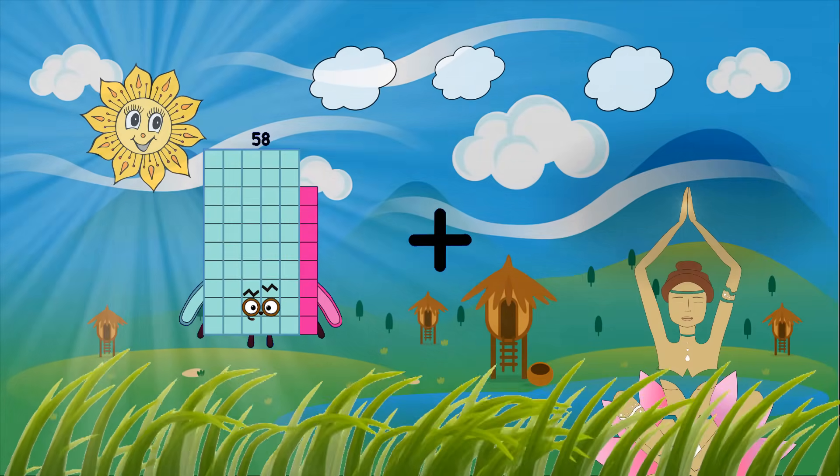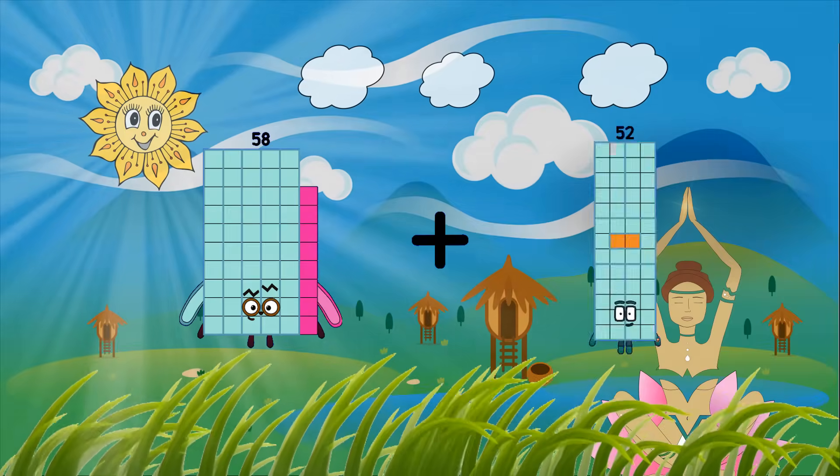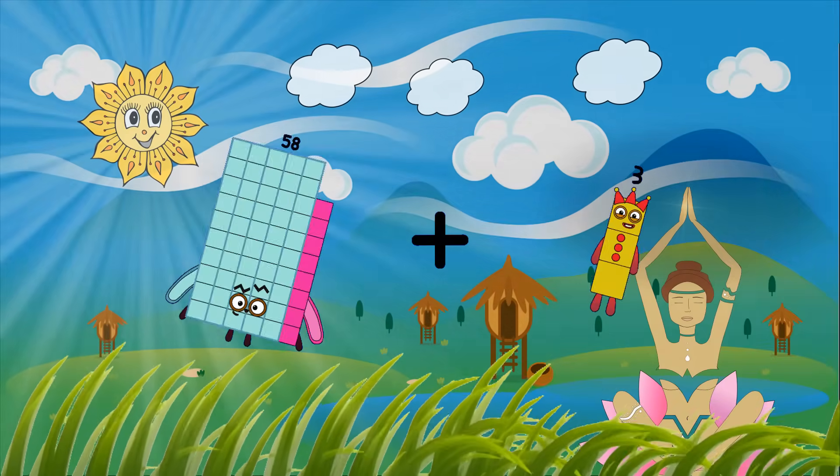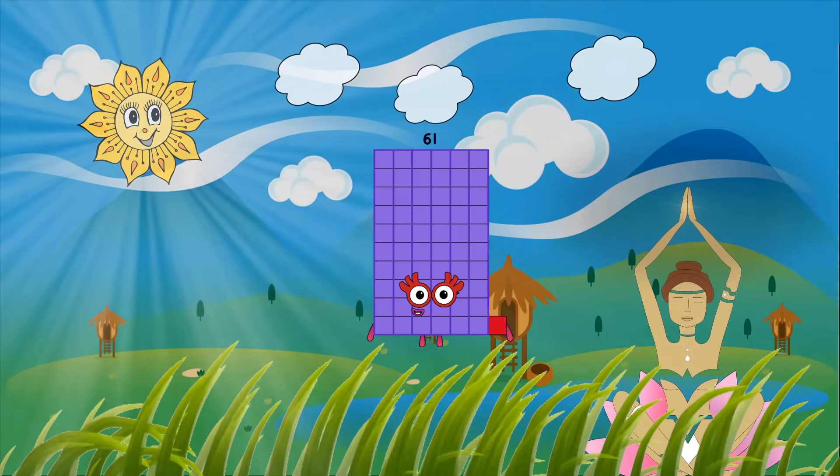Fifty-eight plus three equals sixty-one.